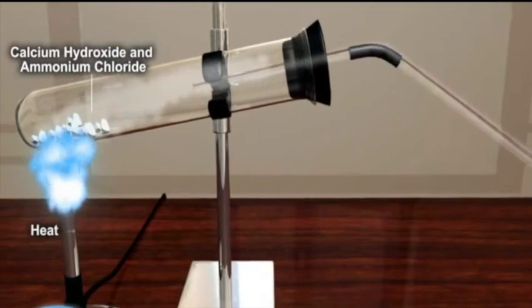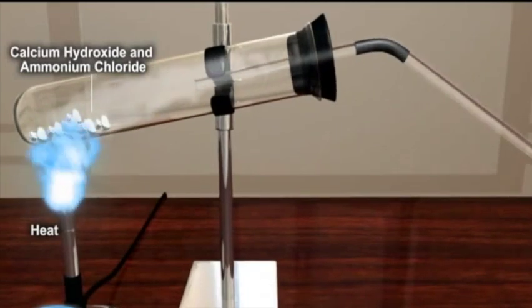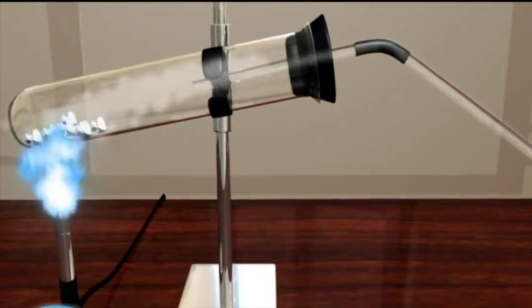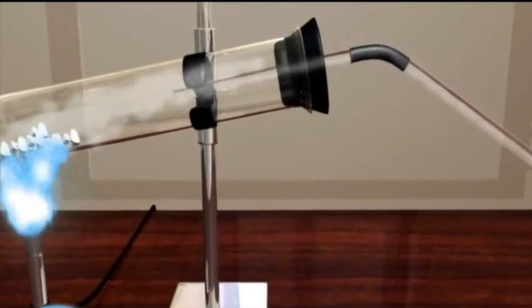It is lighter than air. In a small test tube, mix two spatulas of ammonium chloride with two spatulas of calcium hydroxide together. The two solids begin to react immediately on mixing. If we continue to heat the mixture...